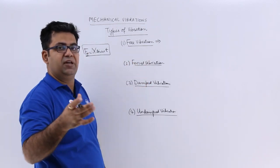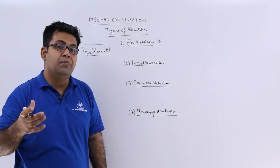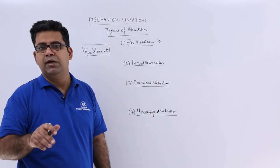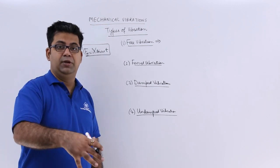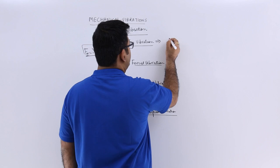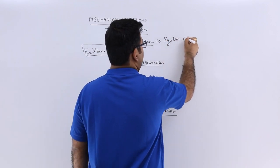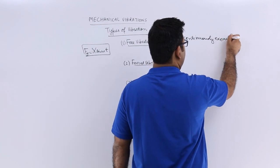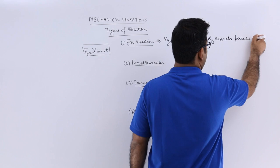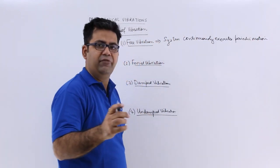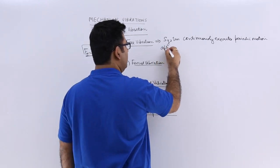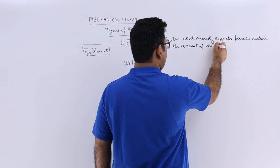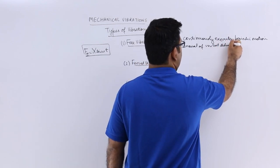Free vibration is that vibration in which the periodic disturbing motion continues after removing the initial disturbing force. You push the system and the system keeps on executing that periodic motion continuously without any further use of that disturbing force. The system continuously executes the periodic motion after the removal of initial disturbing force.